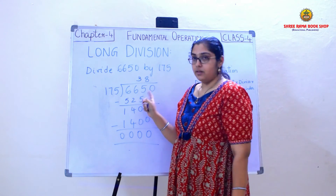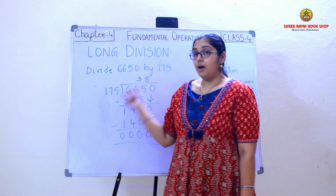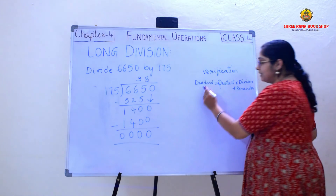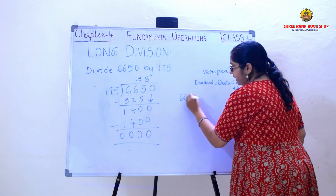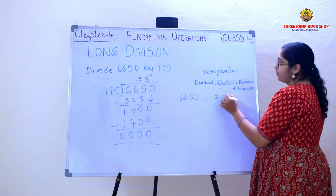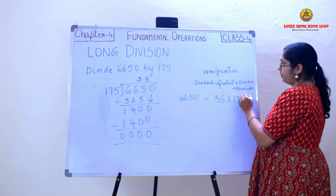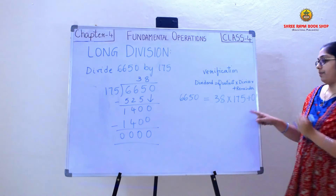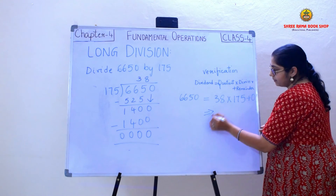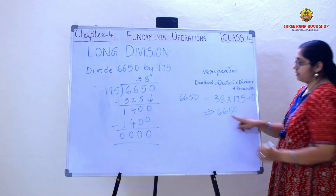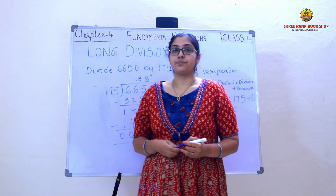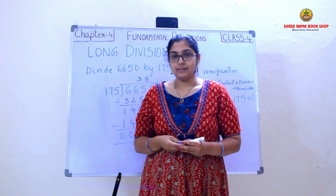Now I will verify whether my quotient, remainder, divisor, and dividend are all correct. Dividend equals quotient into divisor plus remainder. The dividend is 6650, equals quotient 38 into divisor 175, and the remainder is 0. When I multiply 38 and 175, I get 6650, which is nothing but the dividend. So my answer is correct for the long division. This is how you do long division for a two-digit number, three-digit number, and a single-digit number.